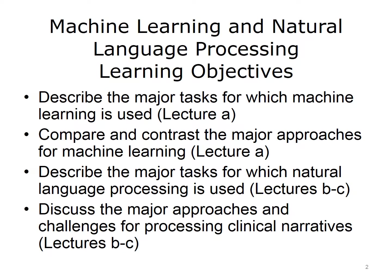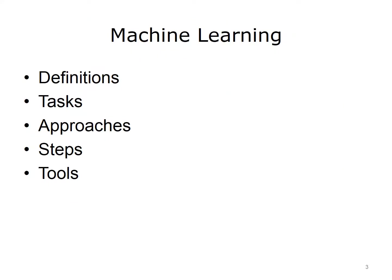The learning objectives for this unit, Machine Learning and Natural Language Processing, are to describe the major tasks for which machine learning is used, compare and contrast the major approaches for machine learning, describe the major tasks for which natural language processing is used, and discuss the major approaches and challenges for processing clinical narratives. In this lecture, we'll begin by talking about definitions of machine learning, then describe tasks for which machine learning is used, followed by discussion of the approaches, steps in the process, and the tools employed.